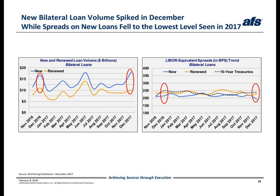In addition to examining trends in total balances, the AFS pricing dashboard enables users to analyze trends for new and renewed loans. On slide 23, we begin with a look at new and renewed bilateral loans. Starting on the left, we can see that December's new loan volume is higher than last December, while renewal volume is slightly lower. However, both new loan volume and renewal volume are higher when compared to the prior month. Moving to the chart on the right, December's LIBOR equivalent spreads are lower than last December. Compared to last month, the weighted average LIBOR equivalent spread for new loans went down 29 basis points to 199 basis points. For renewals, the average spread rose to 230 basis points, up 14 basis points from the previous month.